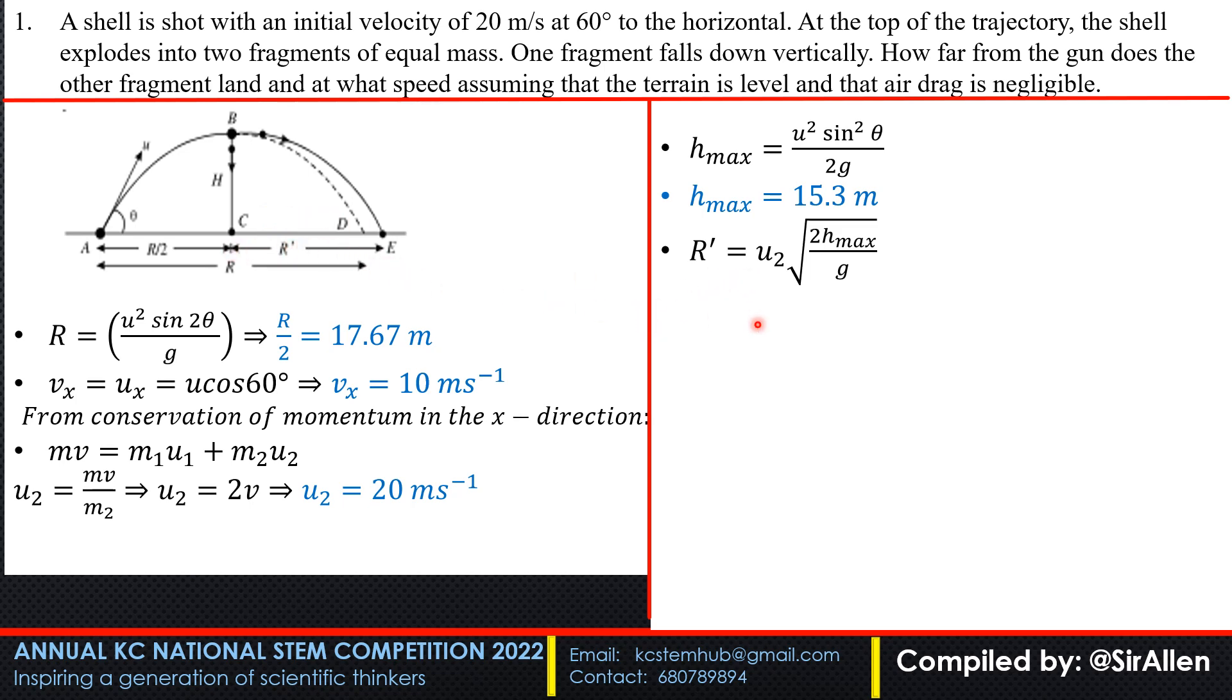Range, this part R prime, is u times t. u in the x direction is u2. For t, we use the vertical displacement: s equals ut minus half gt squared. Since u is zero, h equals half gt squared. Making t the subject, t equals square root of 2h over g. So R prime equals u2 times square root of 2h over g.